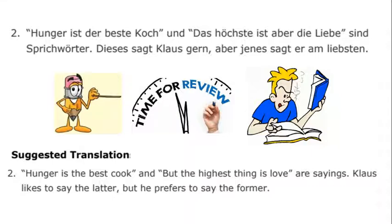But here we also have the superlative, and this shows particularly nicely the irregularity of the shift from comparative to superlative form. The first: dieses sagt Klaus gern — he likes to say that. But the second uses the superlative form am liebsten. So we have gern and am liebsten as variations on the same idea but very different forms — a little like English good, better, best, where only the suffix changes. This is different from a regular comparative and superlative like tall, taller, tallest.